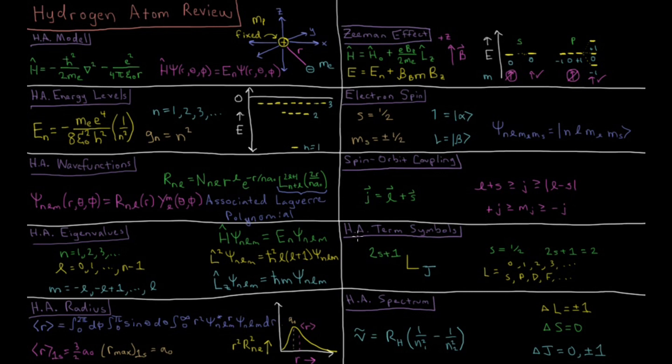We then discuss term symbols, which are representations of different electronic states within a hydrogen atom once you account for spin-orbit coupling. These term symbols are represented in shorthand for values of s, l, and j. For a single hydrogen atom with one electron, 2s plus 1 in the left-hand corner is always 2, or a doublet.